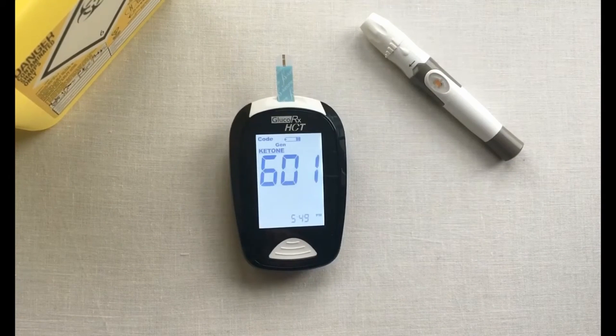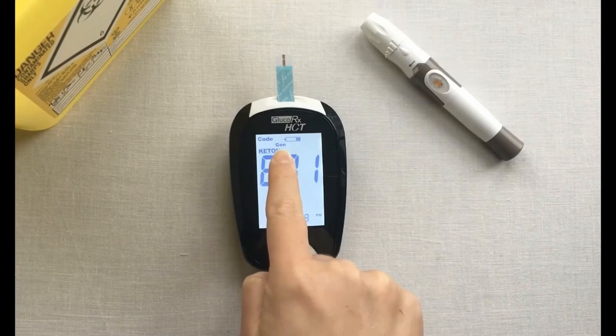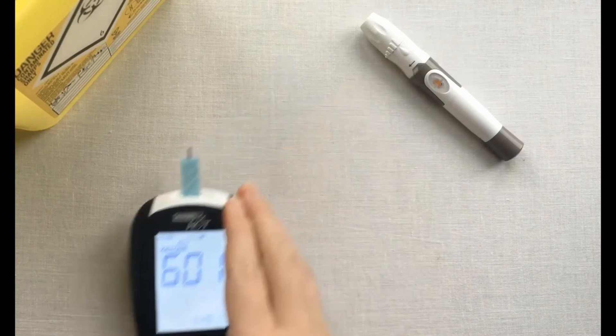Once the meter is ready to perform the test, you will see a flashing blood drop at the top of the screen. The meter automatically identifies if you are performing a QC test.